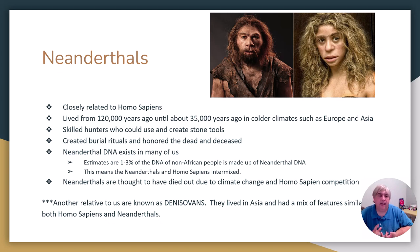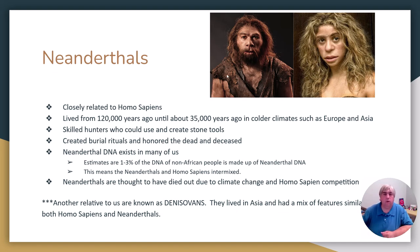There's another relative called the Denisovans. We don't know much about them — they've only been identified from a couple of sites — but it looks like they're a kind of go-between Neanderthals and Homo sapiens, having features of both groups of humanoids.